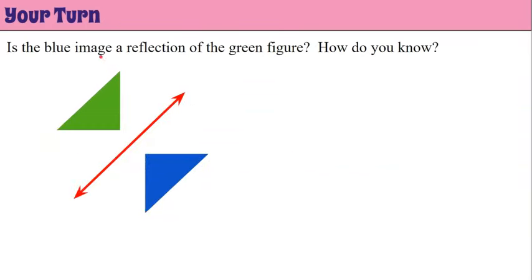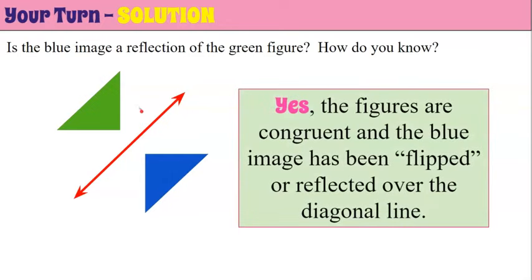One more to try. Is the blue image a reflection of the green figure? Yes — these figures are congruent and the blue image has been flipped. Looking at each vertex, corresponding vertices are the same distance from each side of the line of reflection. If we folded on this diagonal line, they would overlap and be the same. Remember, a line of reflection could be a horizontal line, a vertical line, or even a diagonal line.